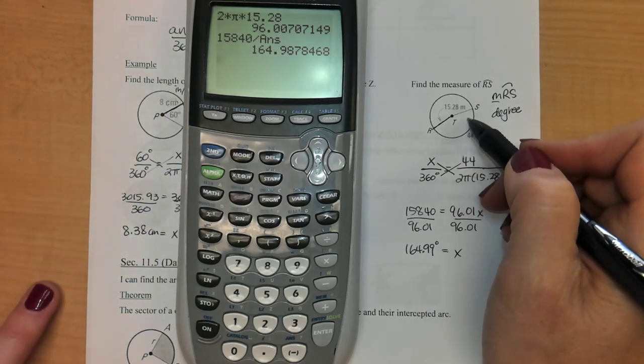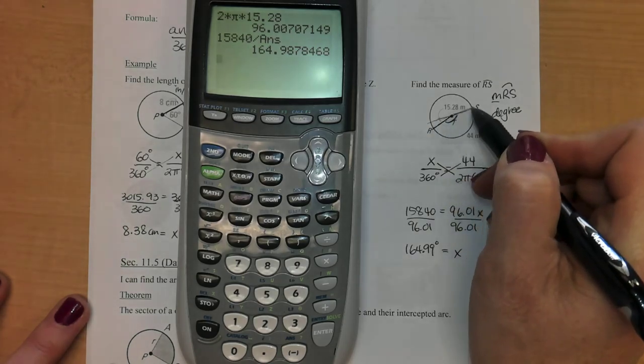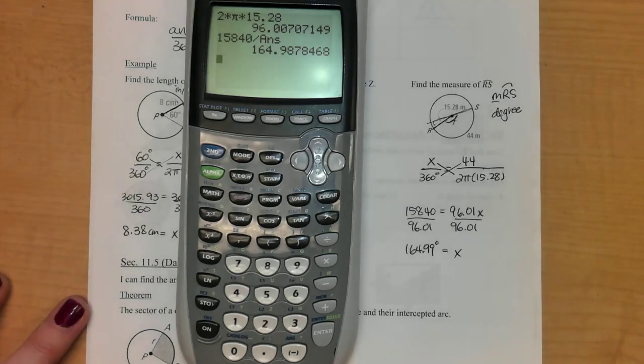Then I kind of want to just come and look at this and go, do I believe that this could be about 164? Sure do, because it's not quite a straight line. That would be 180. So it's got to be just a little less than that.